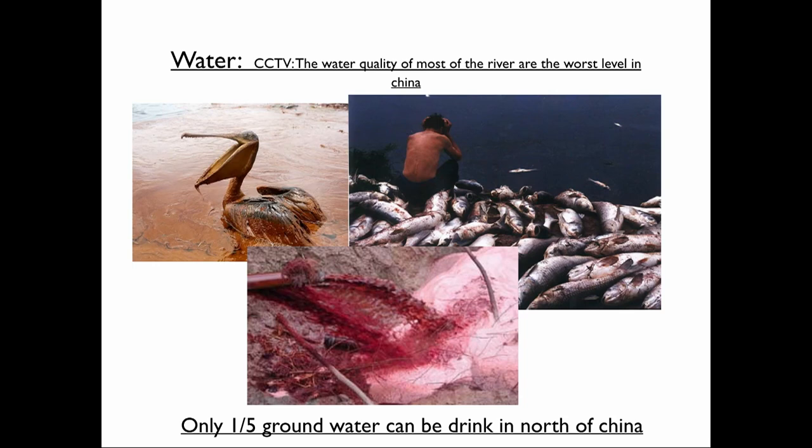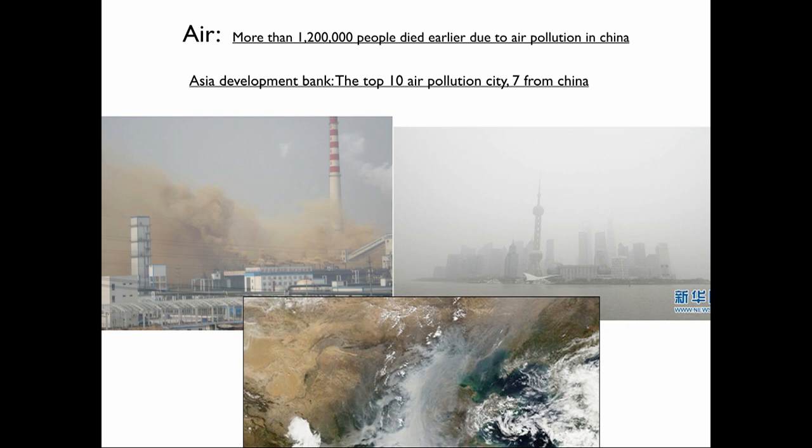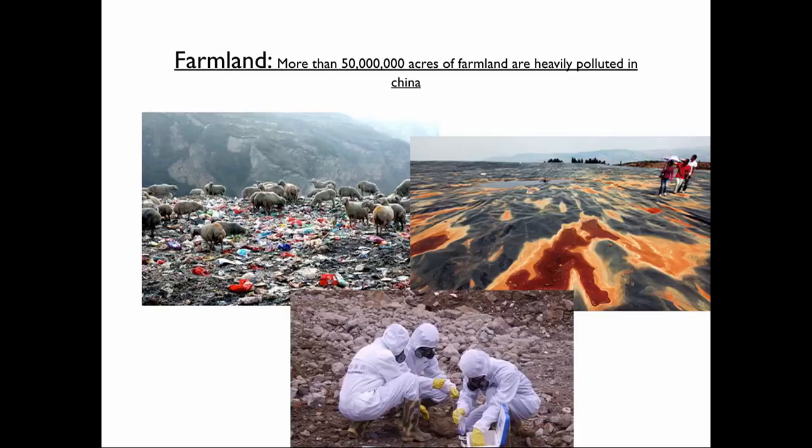For the air, more than 1,200,000 people died earlier due to air pollution in China. You can see Shanghai is in haze. And for farmland, more than 50 million acres of farmland are heavily polluted in China.